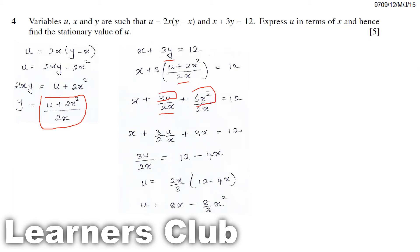Then I can simplify this. This 2 and this 2 can get cancelled, so you get 3x. This x will get cancelled, so it becomes 3x. 3x plus x will be 4x. I'm taking to the other side, so it becomes 12 minus 4x.